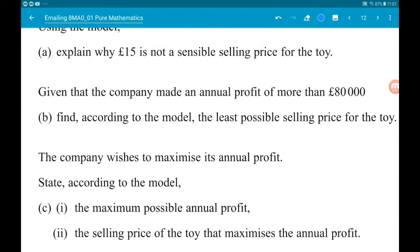Okay, then part b says, given that the company made an annual profit of 80,000 pounds, we want to find, according to the model, the least possible selling price for the toy. So what we're going to do is work out the price of the toy that would lead to an exact profit of 80,000 pounds.